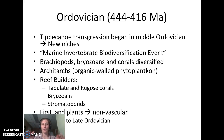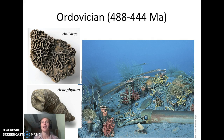Looking at what the Ordovician reefs looked like, we see lots of different groups: cephalopods, trilobites, horn corals, and chain corals. Halysites is one of the tabulate corals, and Heliophyllum is a representative of one of those horn corals — the solitary rugose corals. That gives us a look at what the Ordovician sea looks like: a pretty active time with lots of cool stuff going on.